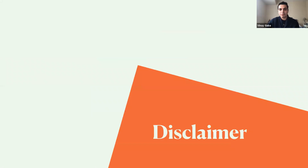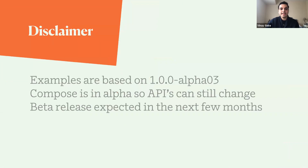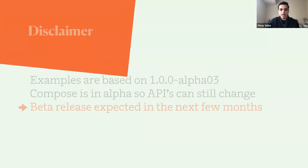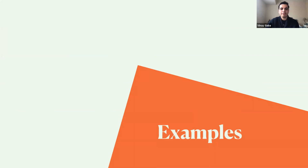Before I dive right into examples — this is basically the code portion of the talk — I want to add some disclaimers. The first one is that all the examples you see are based on the alpha-03 release. There are a lot of changes happening in Compose and APIs are changing all the time. Our goal is to not exactly memorize the APIs, but see how Compose is approaching things and hopefully learn a few things along the way. Compose is still in alpha, so APIs can still change. The beta release is expected to come out in the next few months. Alright, with all this preface, let's dive right into examples.